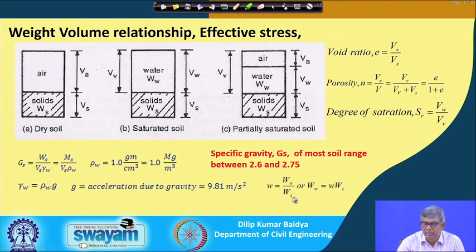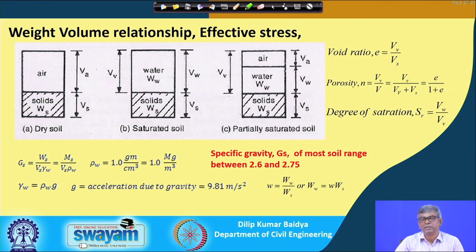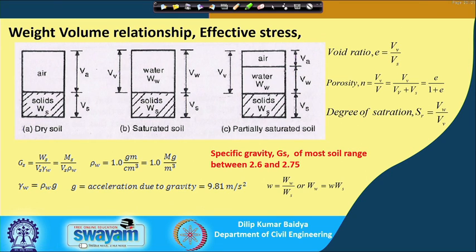Water content is another important term: it is the weight of water divided by the weight of solid. Water content is very important because with the addition of water, soil behavior changes greatly. We find it from a sample by taking the initial moist weight, putting it in an oven for 24 hours, then taking the dry weight. The loss of weight is the weight of water, and the final weight is the weight of solid. So that ratio gives you the water content.